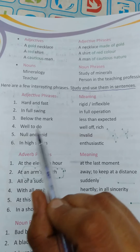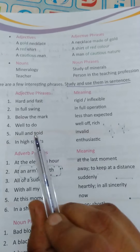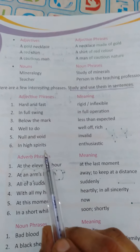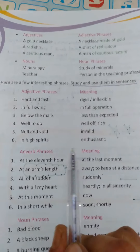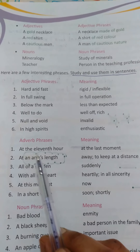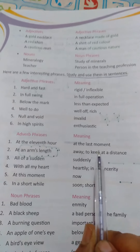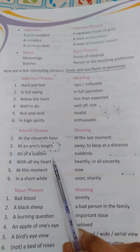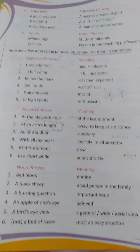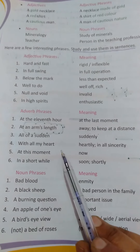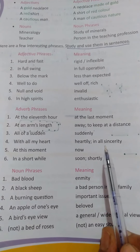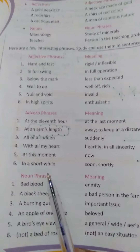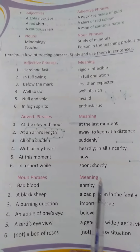Well to do means well off — very rich. For example: 'He belongs to a well-to-do family.' Null and void means invalid. In high spirits means enthusiastic. Adverb phrases: at the eleventh hour means at the last moment. At an arm's length means to keep at a distance. All of a sudden means suddenly. With all my heart means in all sincerity. At this moment means now. In a short while means soon.